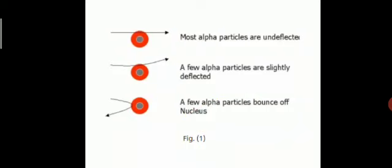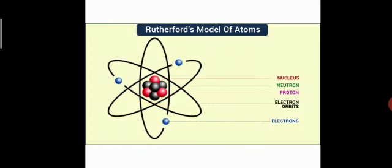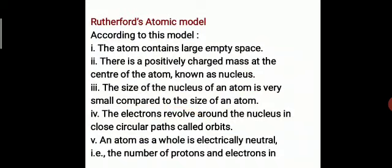How did he know the nucleus is positively charged? Because the alpha source he was passing is also positive. If the central particle were negative, the positive ray would be attracted and not bounce back. But it is bouncing off — which means like charges are repelling. So the particle present at the center is also positively charged, and he named it the nucleus.